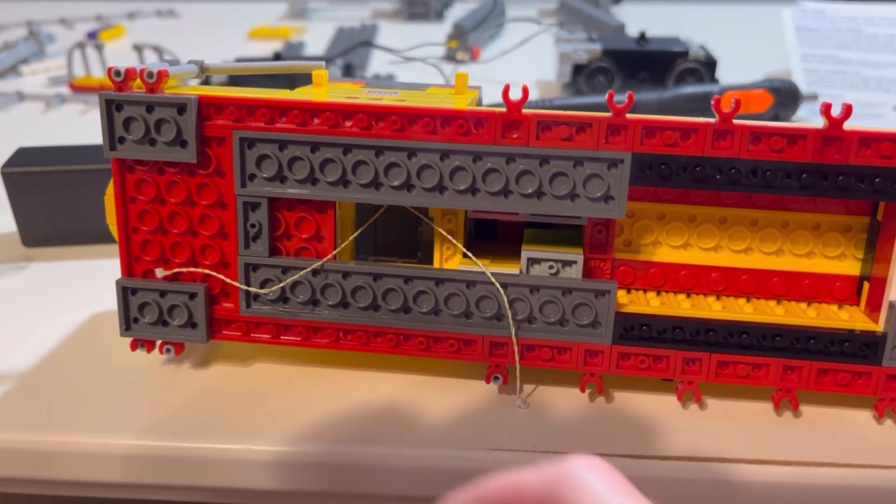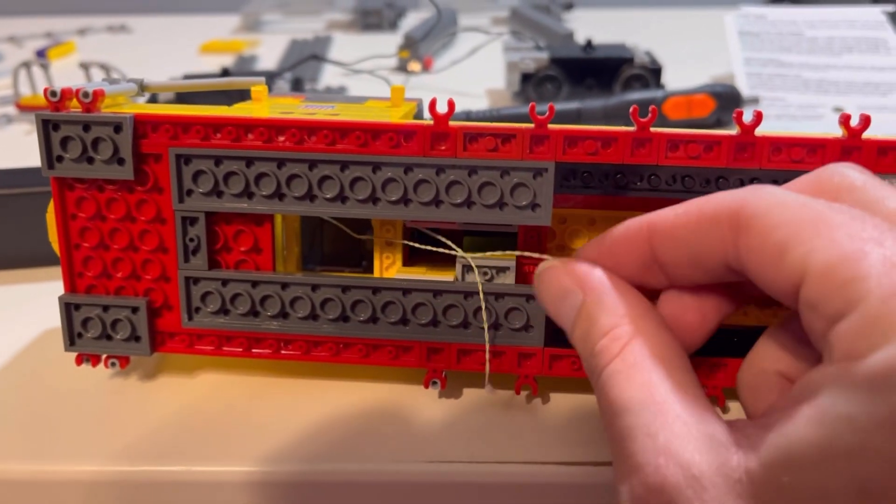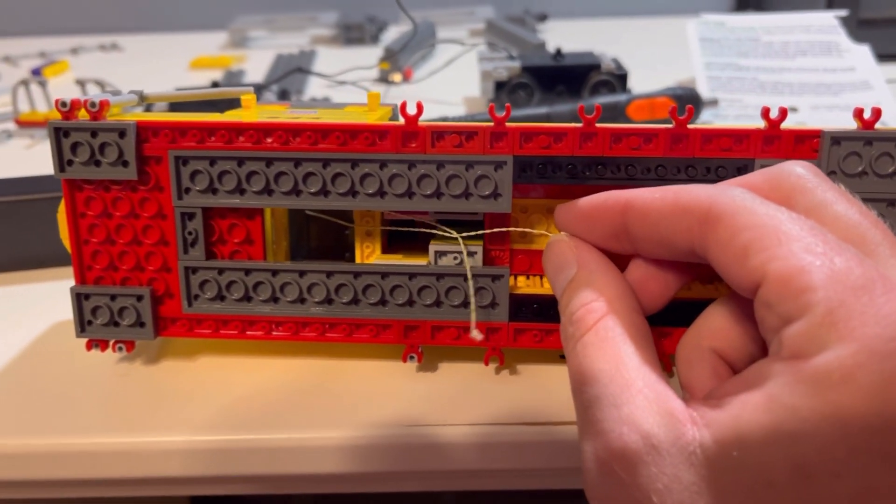So here's the headlight housing attached to the roof section. See the wires are so small that you can actually pretty easily pinch them in between the Lego bricks without any problem at all. So we're just going to feed them straight down through the cab and we're going to flip it over. Our wires come straight down to the bottom there where we will wire it up to the rest of our setup.